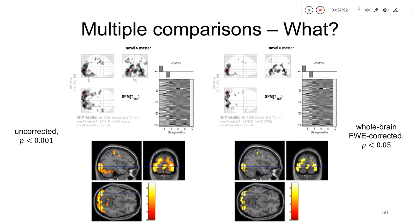In SPM, implementing multiple comparison correction means selecting FWE (family-wise error correction), entering your desired p-value, and specifying an extent threshold — the number of neighboring voxels that must be activated for a cluster to be considered significant. Comparing the novel > master contrast with uncorrected inference (p=0.001) versus FWE-corrected inference (p=0.05) at the whole-brain level, the uncorrected analysis shows many more voxels, including likely false positives, whereas the corrected analysis is more conservative.